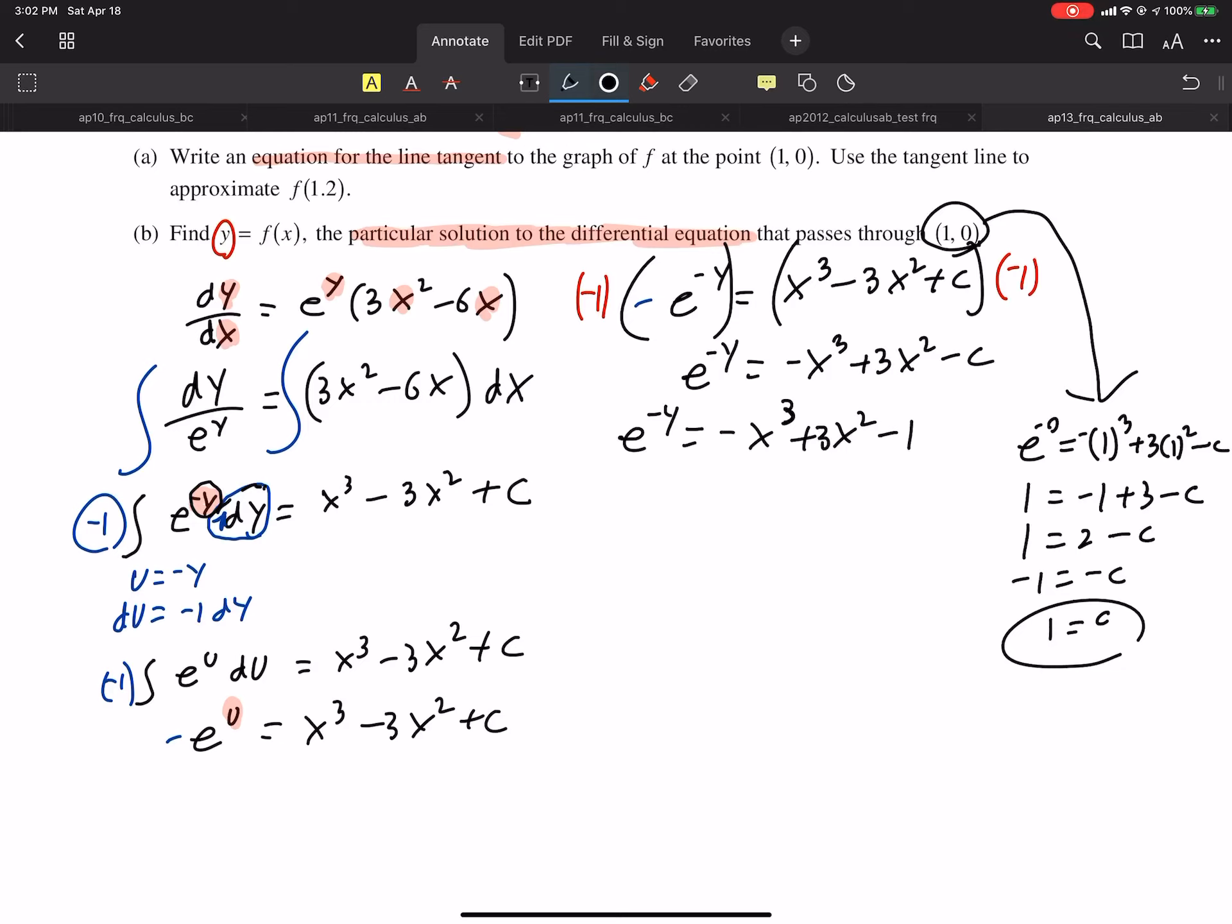Now to solve for y, how do you get rid of e? You have to ln both sides. So we're going to ln both sides. And these nicely cancel. So we get negative y equals ln of this whole blob. And then to get y to be positive, multiply both sides by negative 1. You get y = -ln(-x³ + 3x² - 1). All right. We are done. That is the answer.